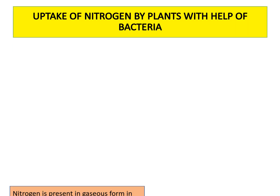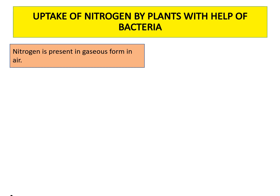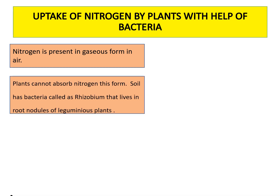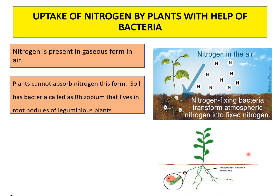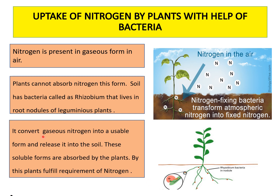Nitrogen is present in the air in gaseous form — about 78% of the atmosphere. But plants cannot absorb nitrogen in this form. The soil generally contains bacteria known as Rhizobium that live in the root nodules of leguminous plants. These bacteria convert gaseous nitrogen into a usable form and release it into the soil. Plants then absorb these soluble forms and use them to make various fats and proteins.